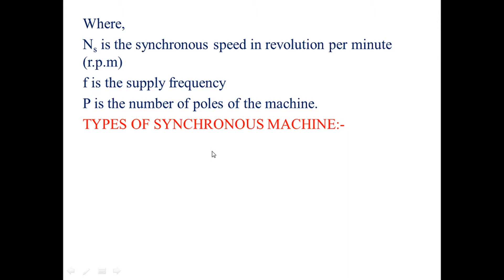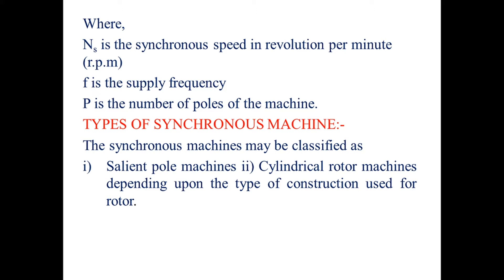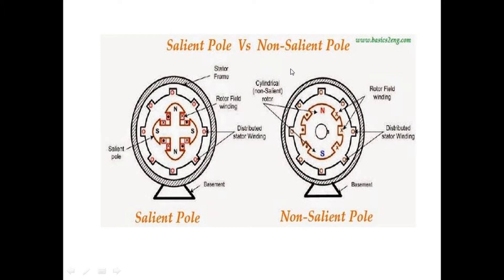Synchronous generators are classified as salient pole machines and non-salient pole machines, also called cylindrical rotor machines. These classifications depend upon the type of construction used in the rotor. In the salient pole type, the rotor has projected poles with alternating north and south poles, rotor field winding, and distributed stator winding. The stator frame holds the armature as the stationary part, while the field winding is the rotating part.